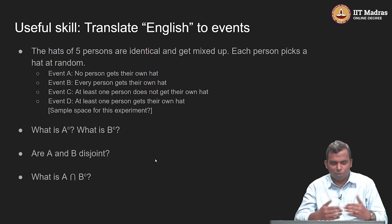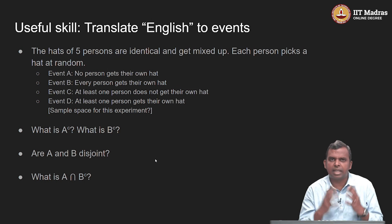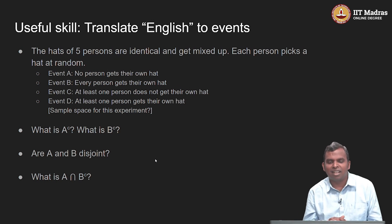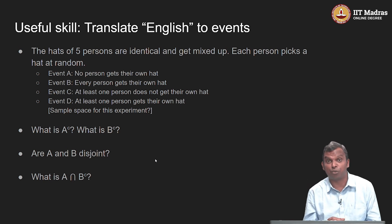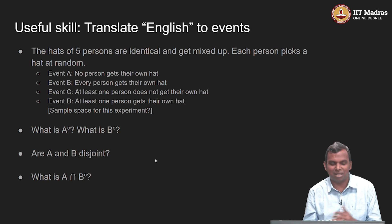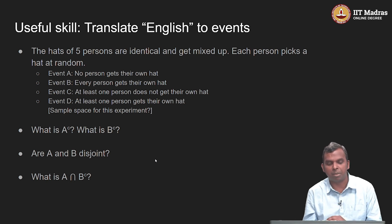We saw this throughout. One of the useful skills you will need in probability theory is translating English into the language of events. We saw just now how 'even but not a multiple of 3' got translated into events as A intersect B complement.